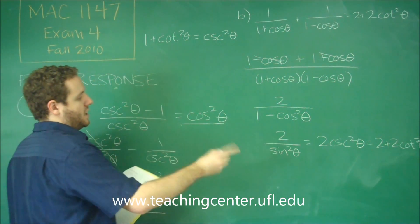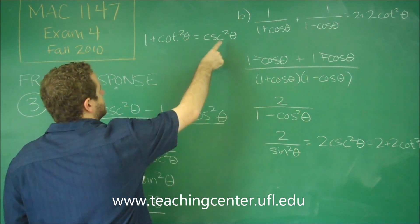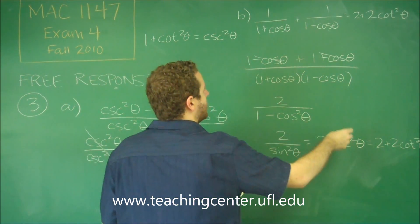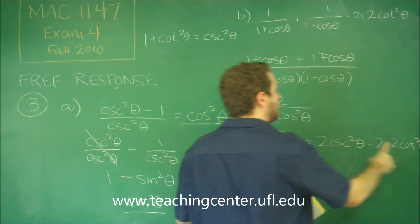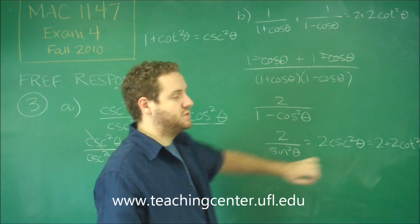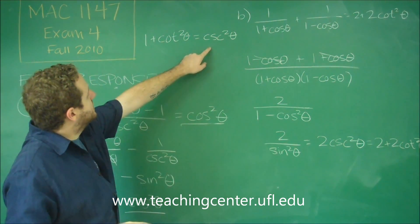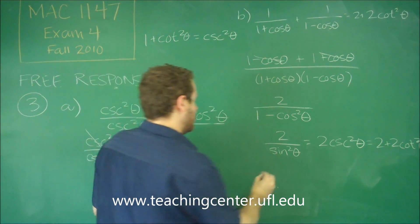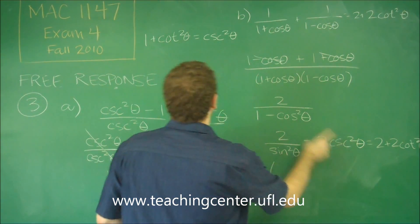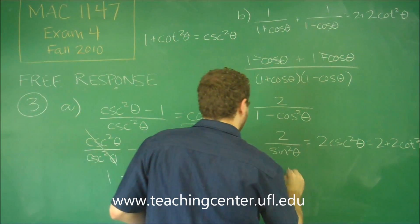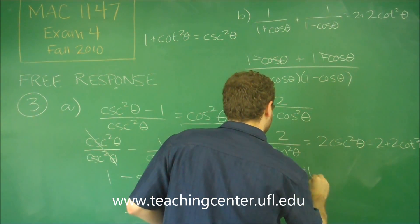So what we can do is, to try to get this to be equal, instead of our cosecant squared, remember, we're trying to get it equal to this. So you only need to work with this side of the equation. Instead of cosecant squared, let's write that. So we have two, but instead of cosecant, we're going to write one plus cotangent squared theta.